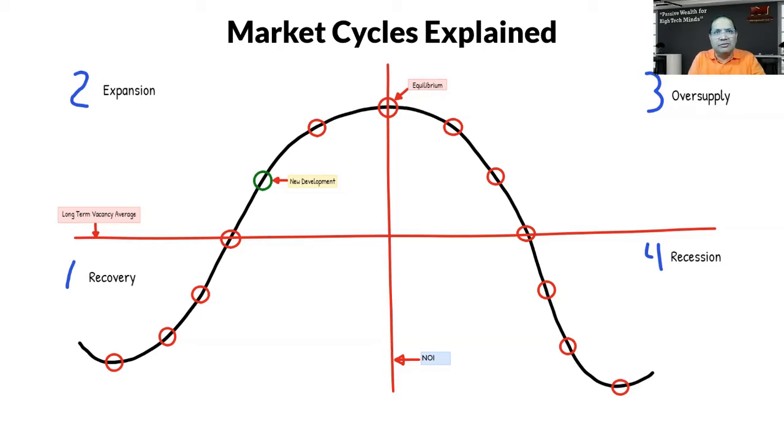The market starts to accelerate pretty quickly. Then you start to see some deliveries at the next point in Phase 2. As units are being delivered, rents are starting to level off because more units are being put in the market. There is absorption taking place at a faster pace now.